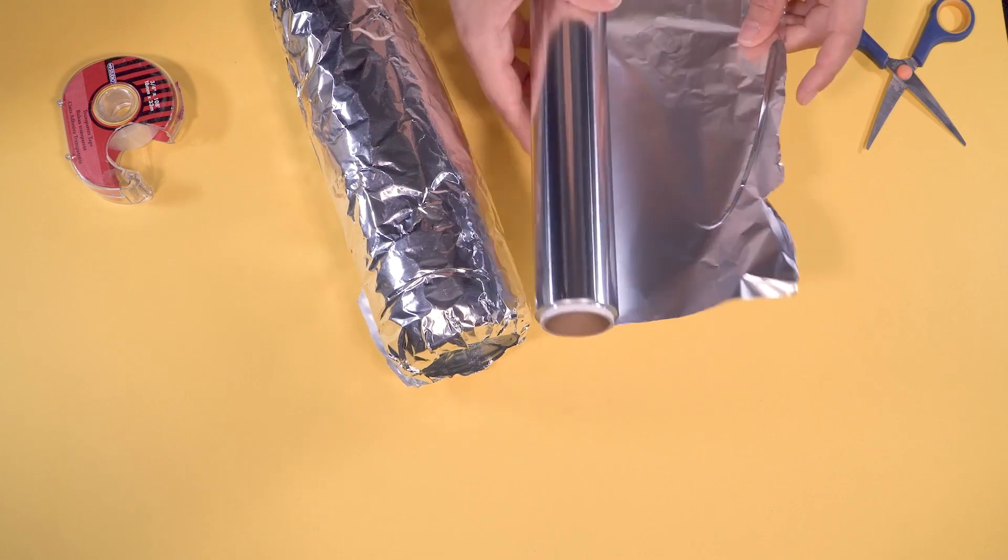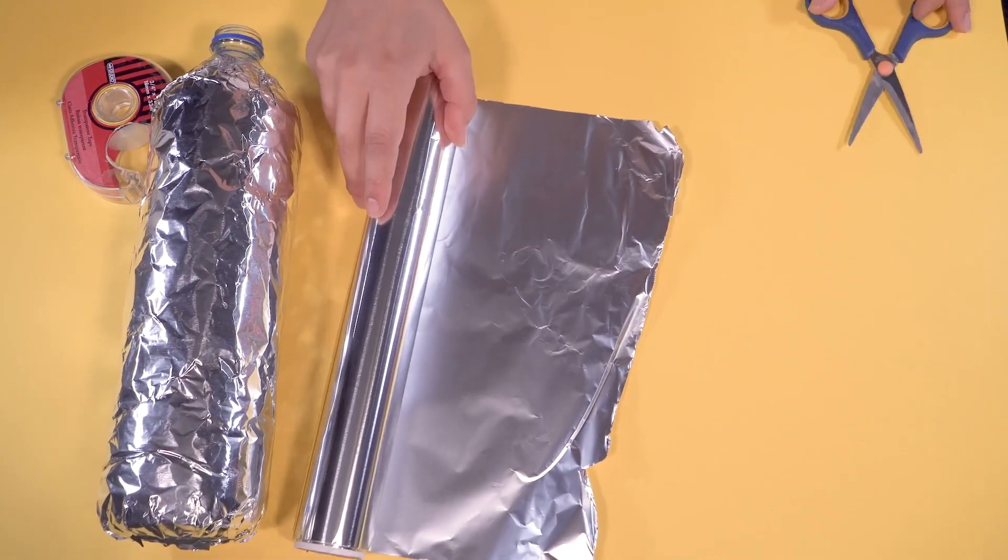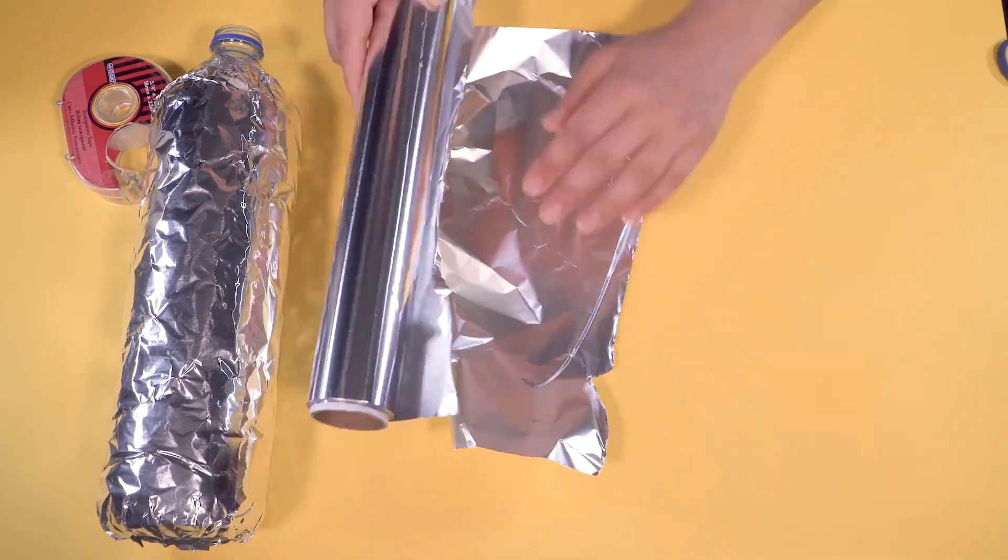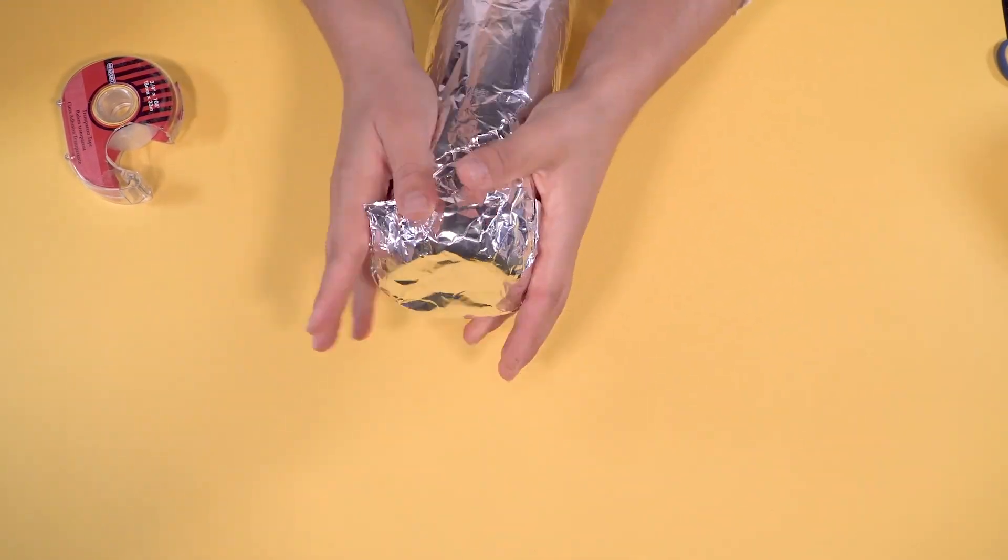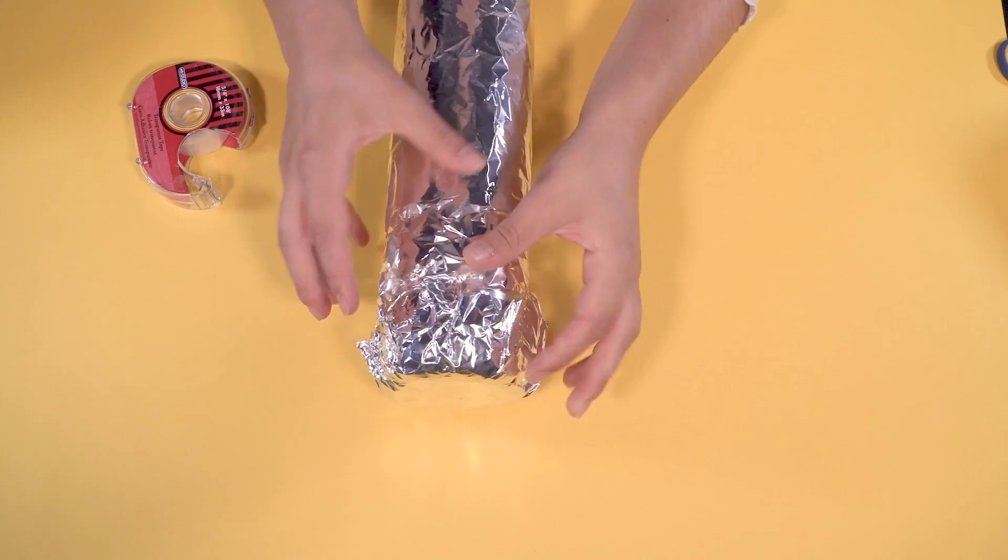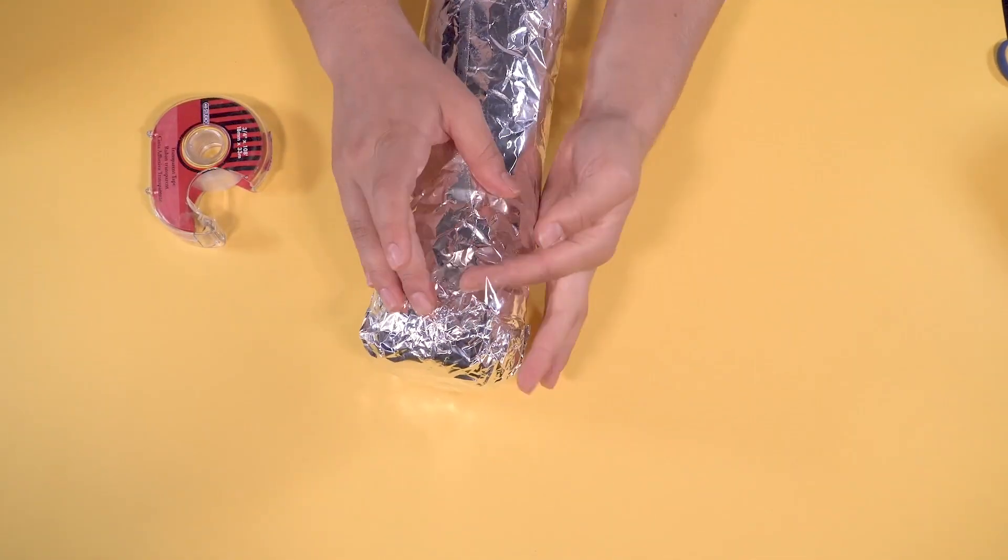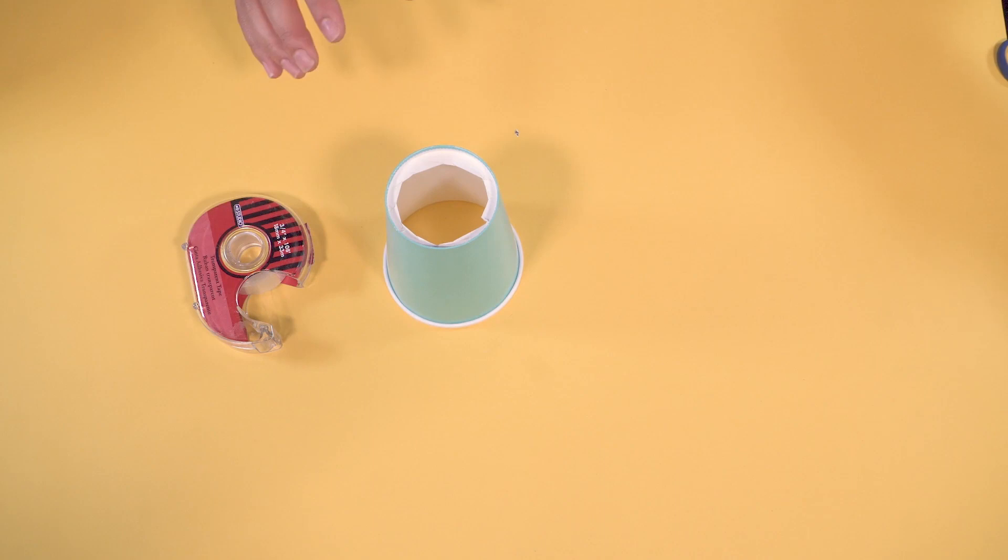And cut out some extra tin foil to cover the bottom. Repeat this step for the other bottle. Now, let's cover our cups in tin foil. Make sure you cover it inside and out.